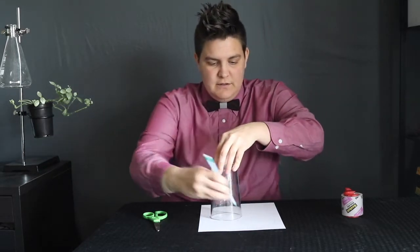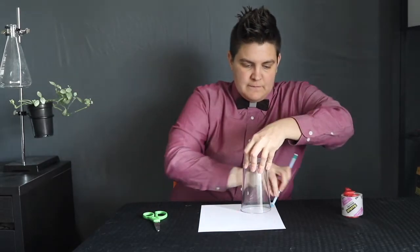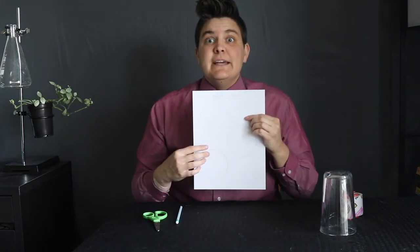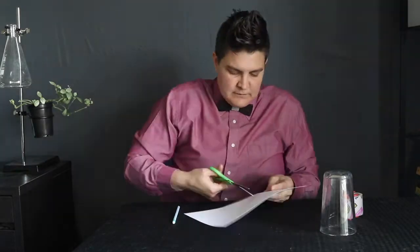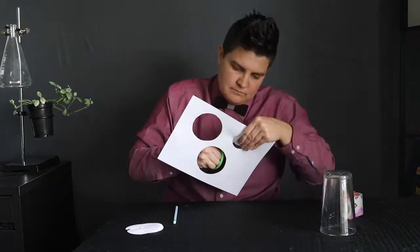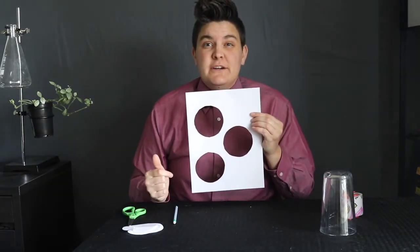Go ahead and trace your cup a couple of times — one, two, three. Now once you have those circles traced on your piece of paper, the next step is to cut them out. You're going to cut out the paper inside the circle so you're left with a hole in the paper.